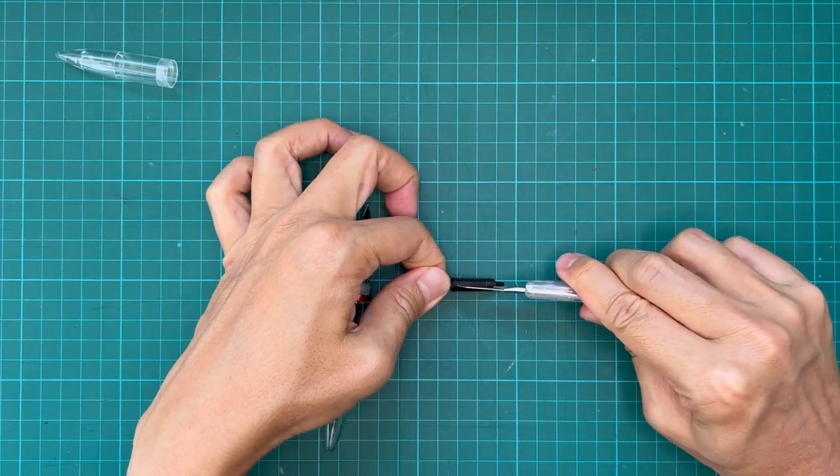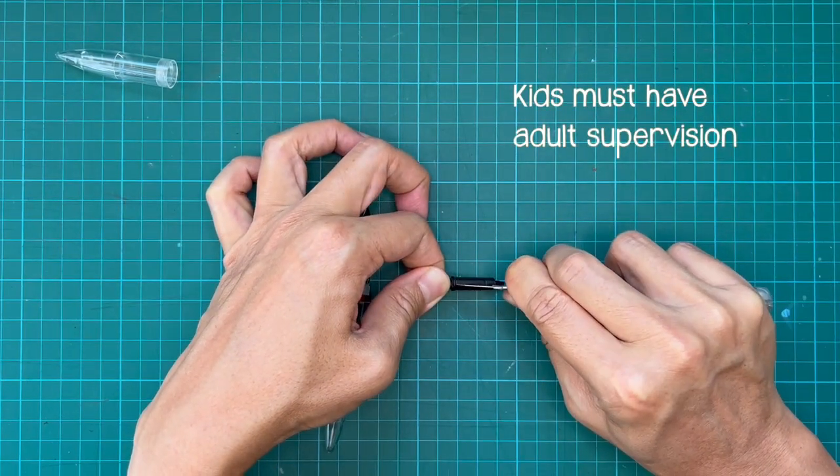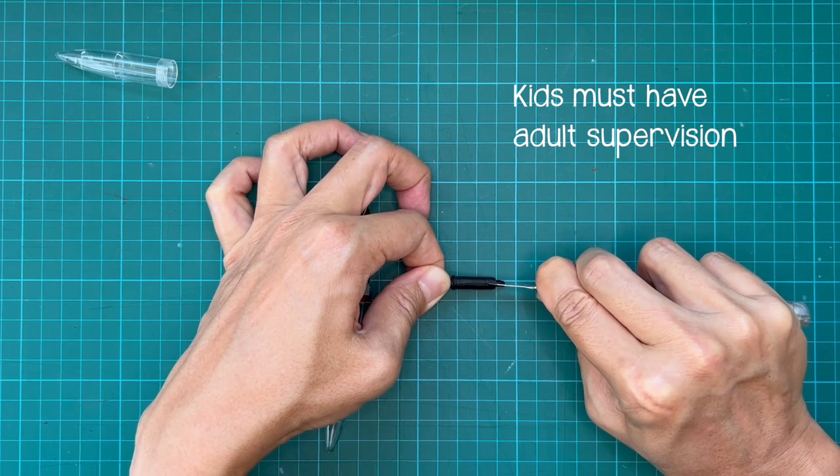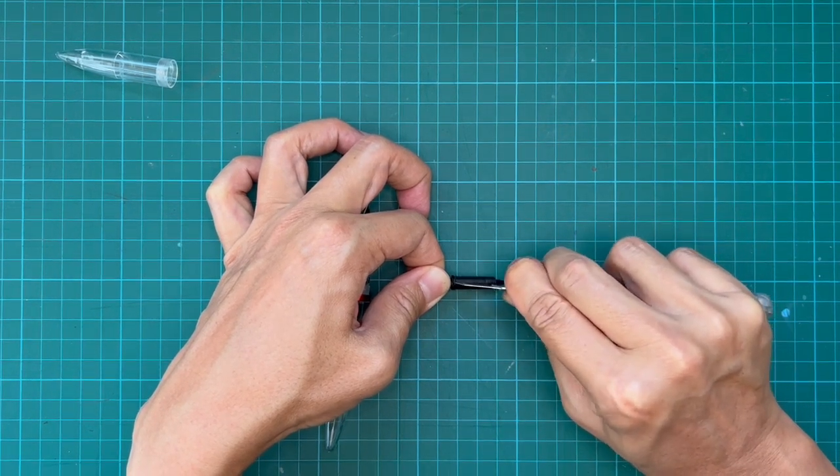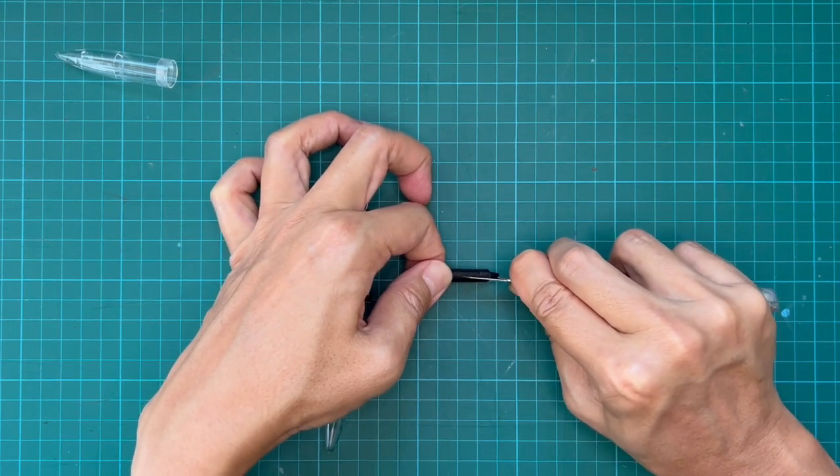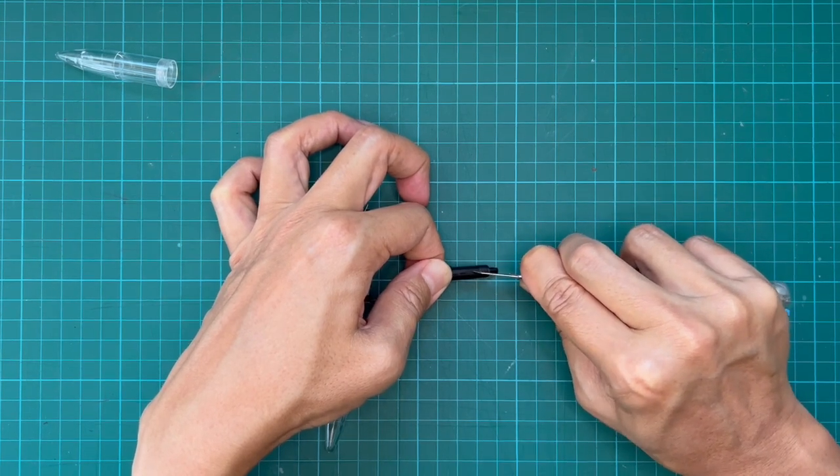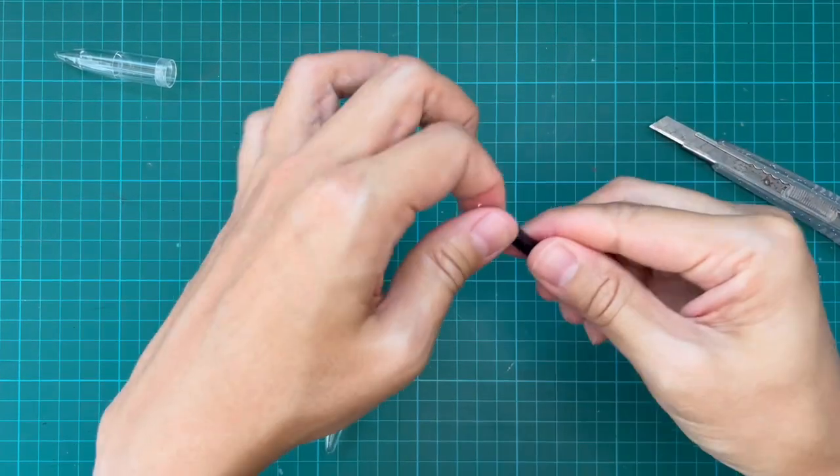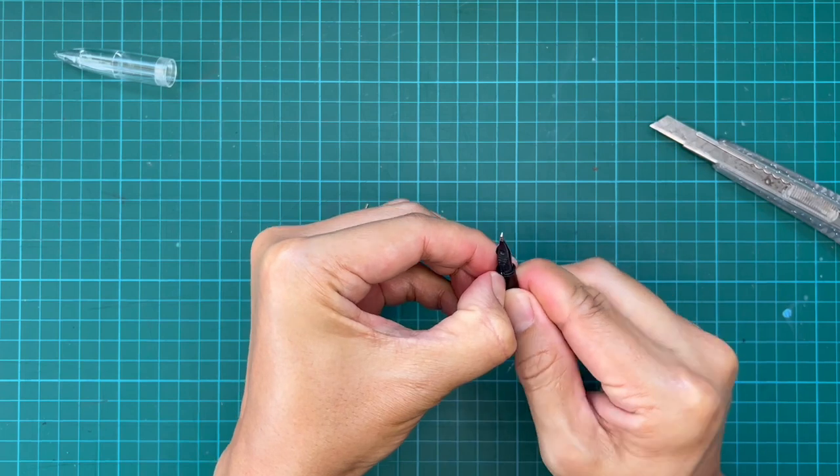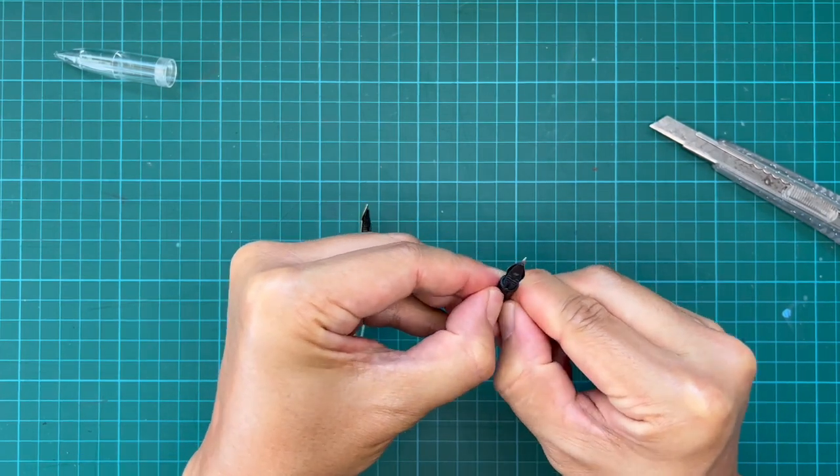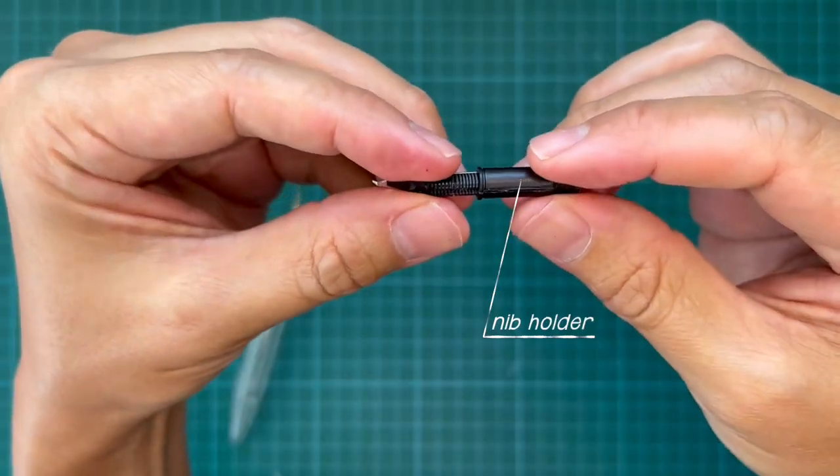So kids, get an adult to assist you with this. So with a few runs of the blade you are able to pry open this base here from the nib holder. And there we go.